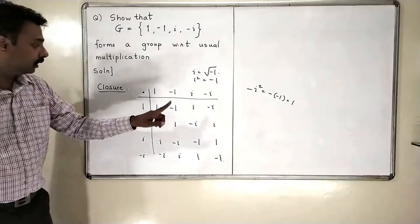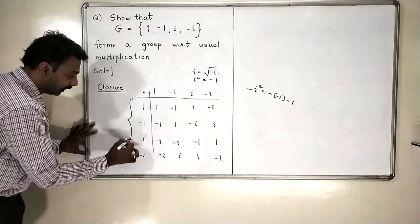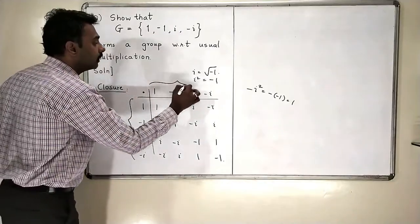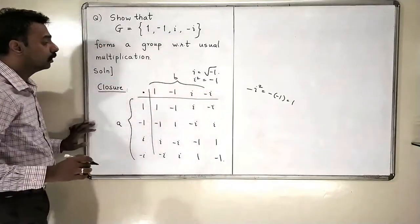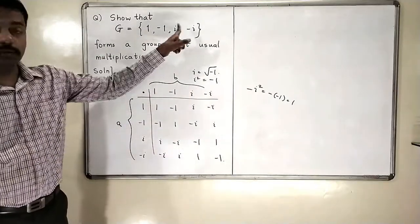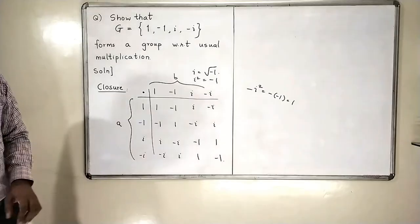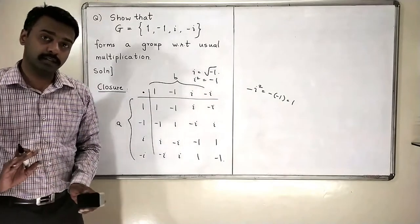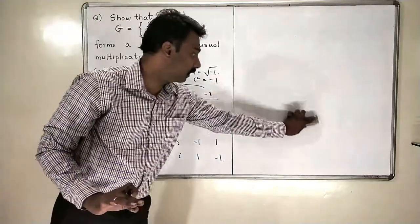All the entries are in the table. If I take any element here, and if I take b any element here, then we see that a into b is, again, coming up to be either 1, minus 1, i, or minus i. So the closure gets completed over here. We have verified the closure.